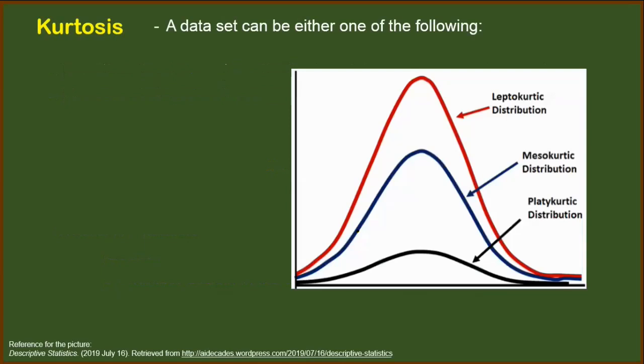A data set can be classified based on the skewness and it can be one of the following. So first, we have mesokurtic. If you may see this blue curve, a mesokurtic distribution has a kurtosis equal to 3.